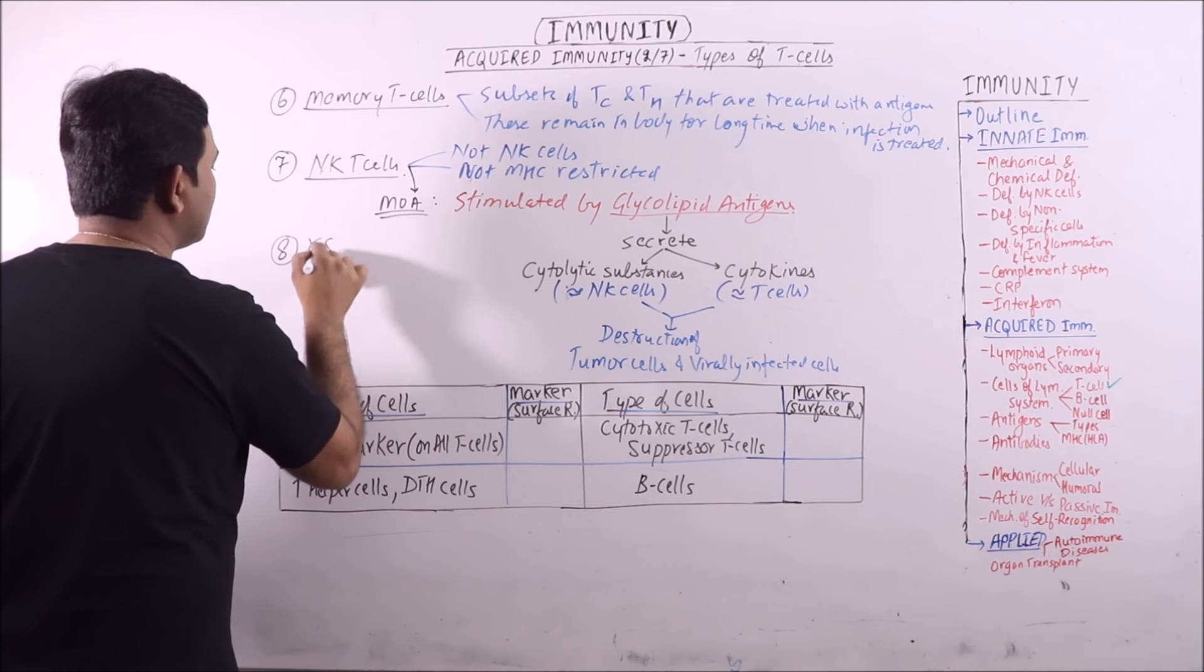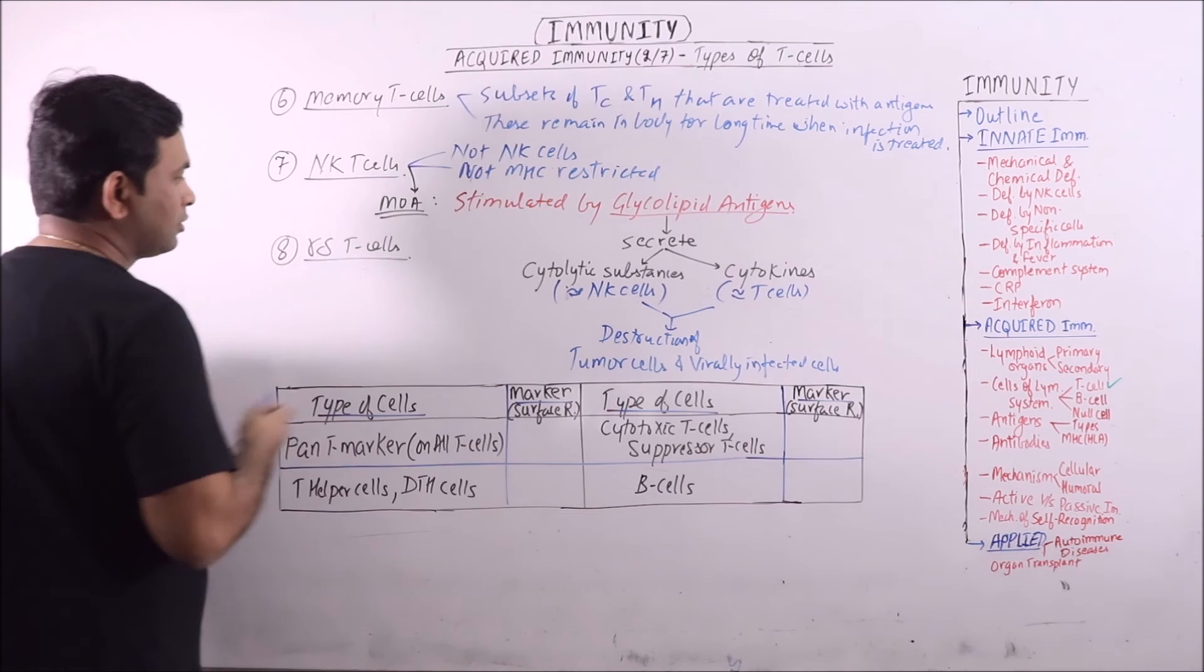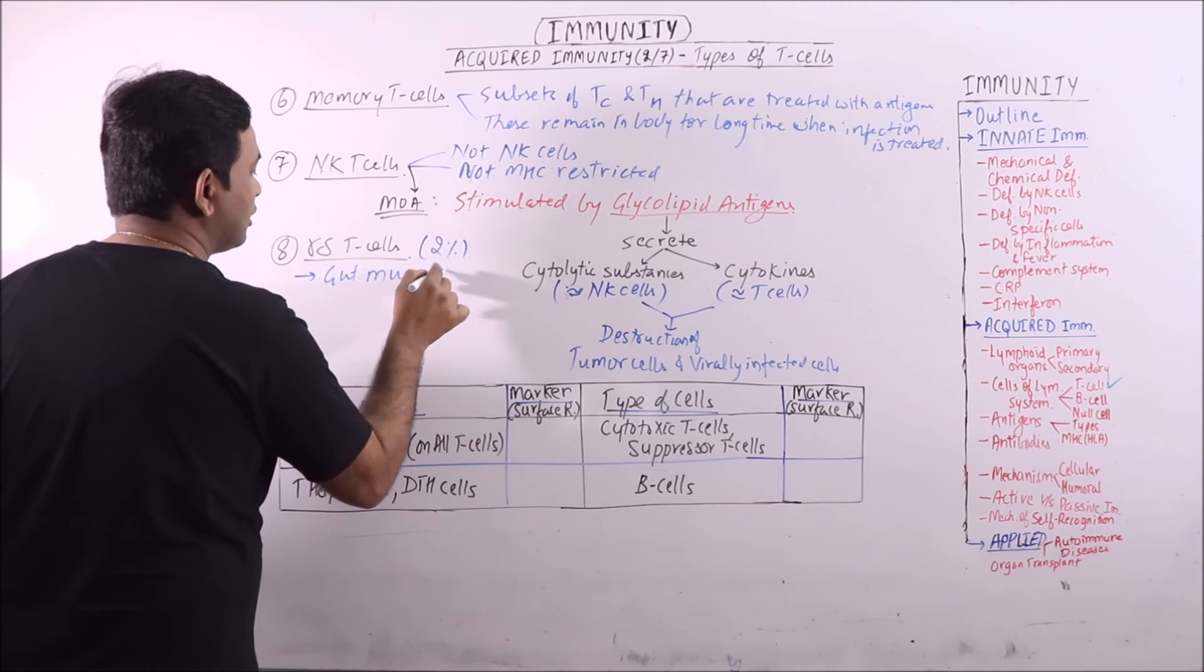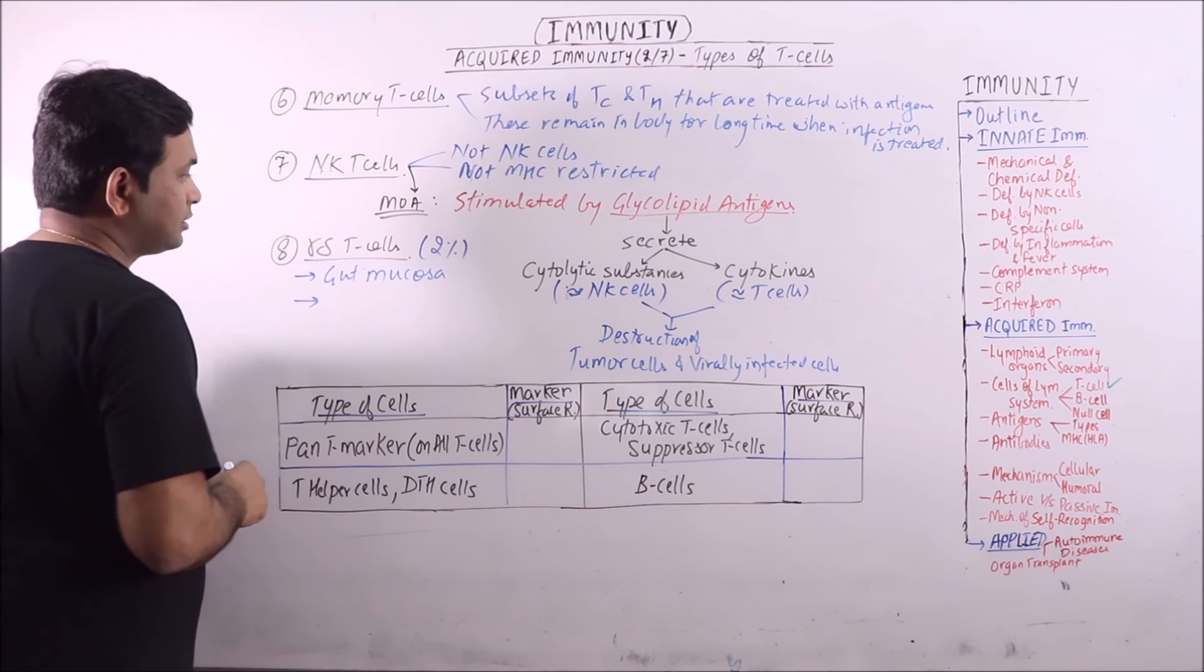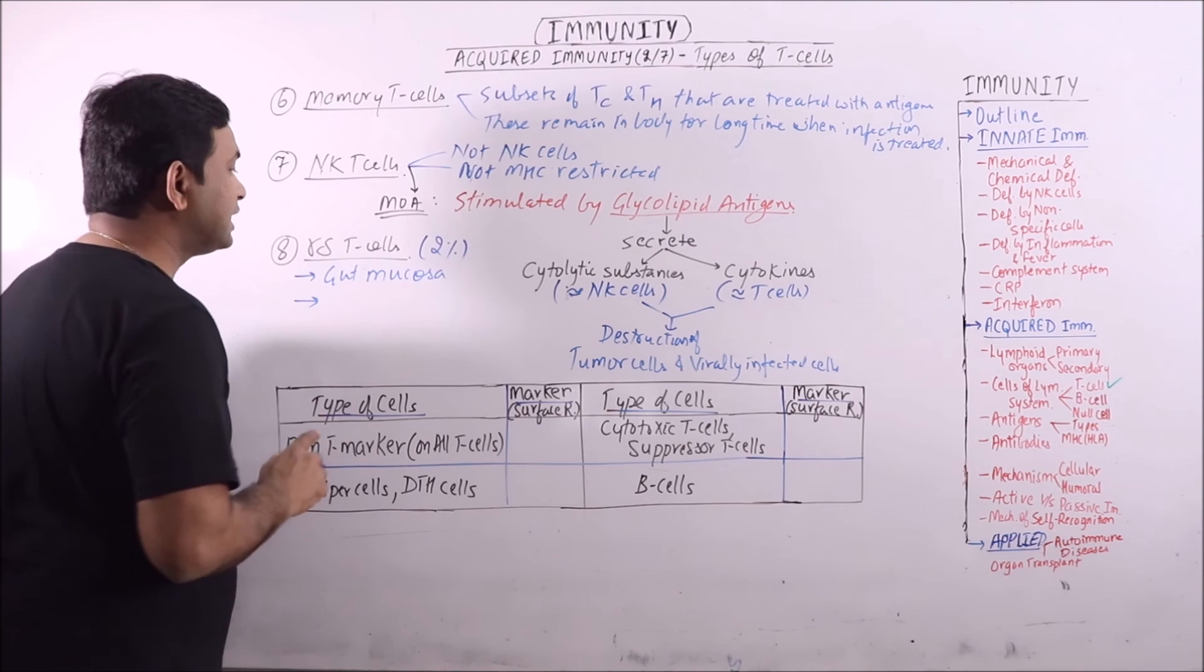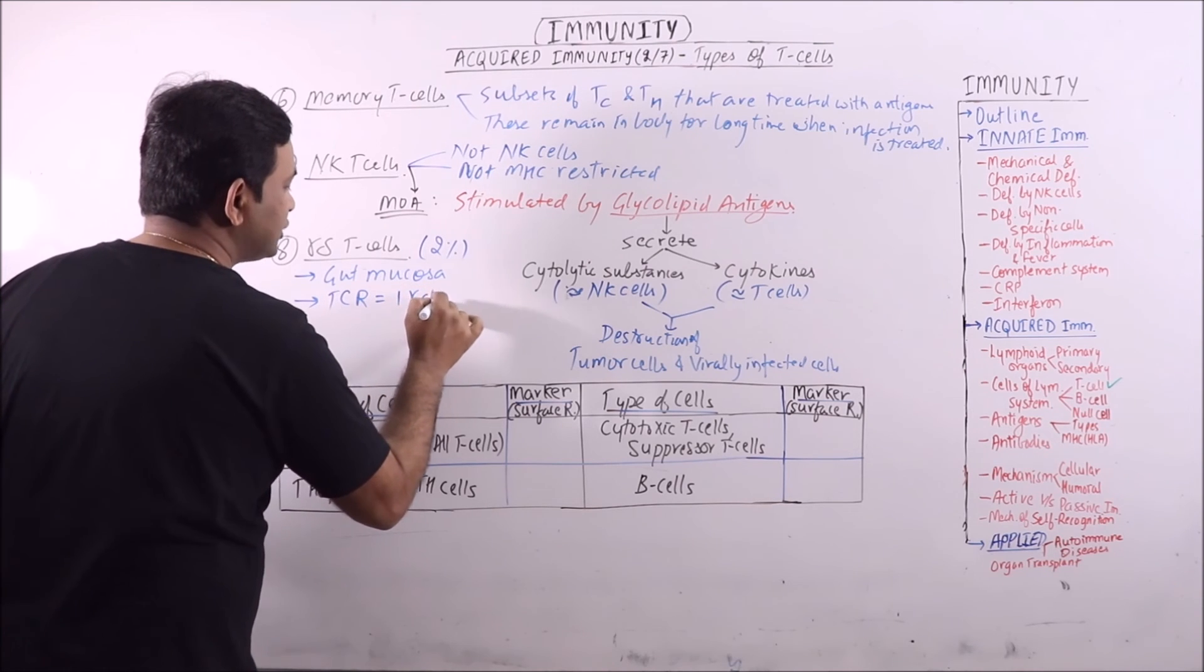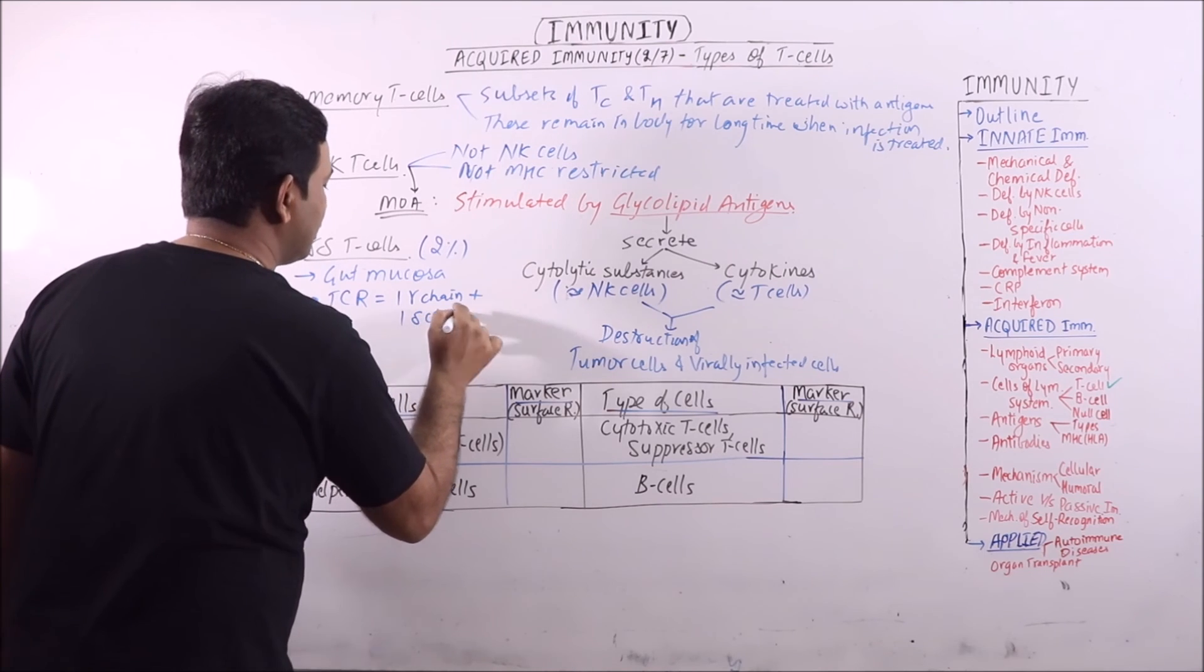The next one is gamma delta T cells. These form 2% of the total T cells and found in gut mucosa. We know that all the T cells are having T cell receptors made up of 1 alpha and 1 beta chain, but these are having the T cell receptors made up of 1 gamma chain plus 1 delta chain. These are also not MHC restricted.